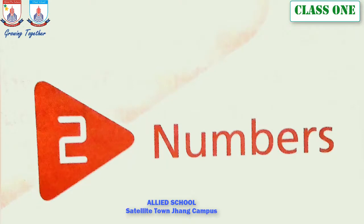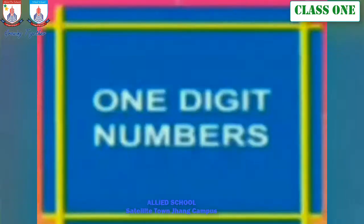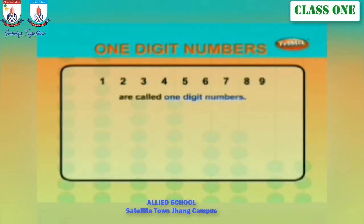Assalamu alaikum students. Today we are going to discuss unit number two, Numbers, and the topic is place value of one and two digit numbers. One digit numbers — one, two, three, four, five, six, seven, eight, and nine — are called one digit numbers.